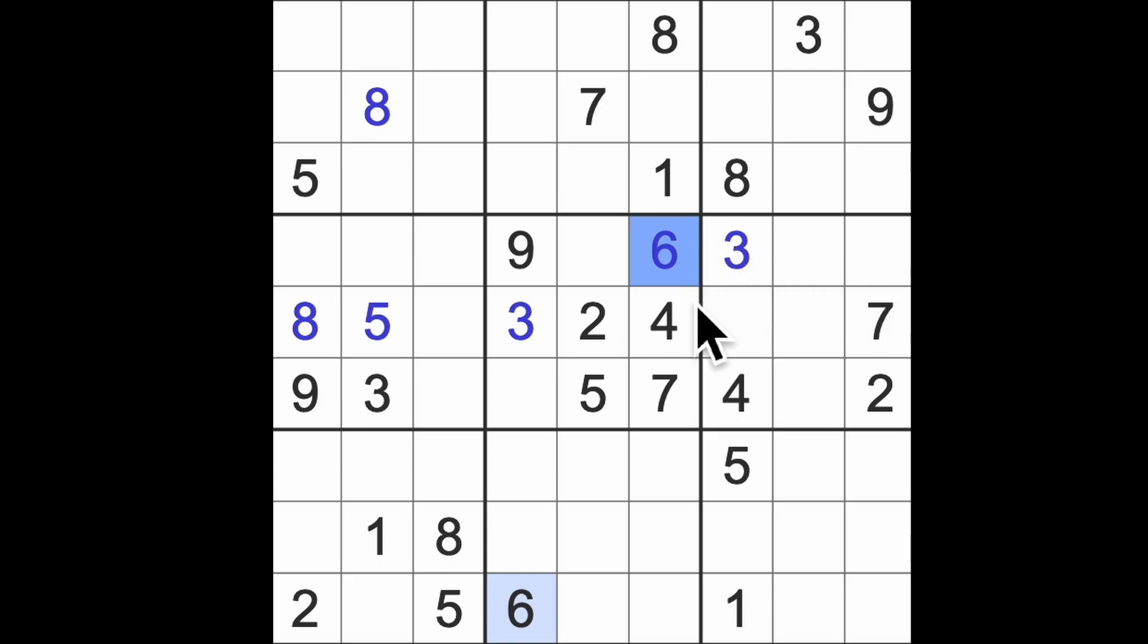Oh yeah, missing numbers in these three squares are one, six, and eight, and we have one and eight here, so this is going to be our six. And that, I think, fellow Sudokus, is about as far as I can. Oh no, I remember there's something else.